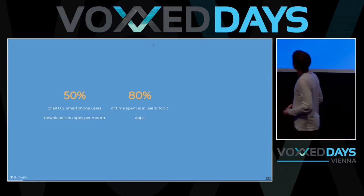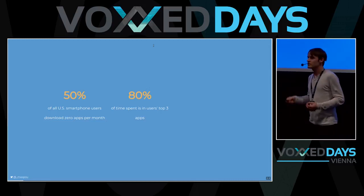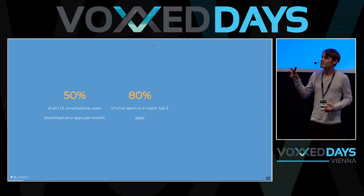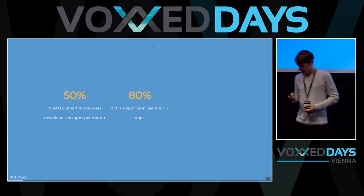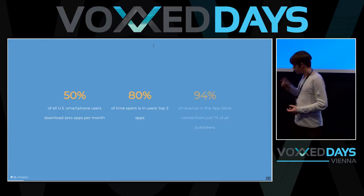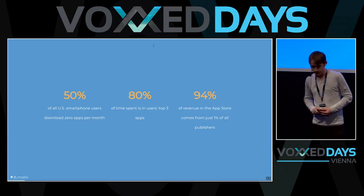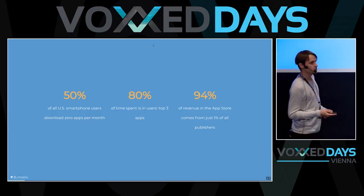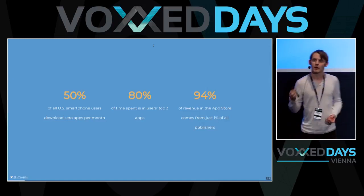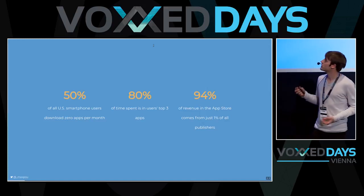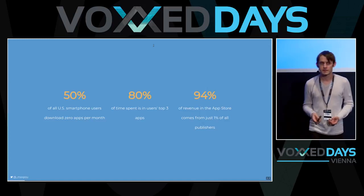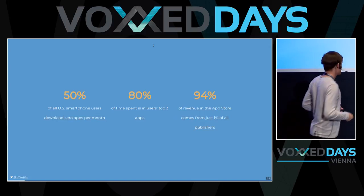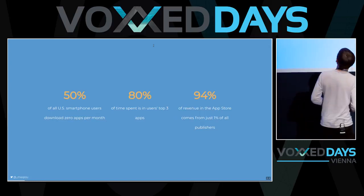Most of the time we spend on our smartphone is on the top three apps. Also, it's more about revenue — it's pretty hard if you are doing a native application to get revenue from this, if you are outside of the big publishers like Google.